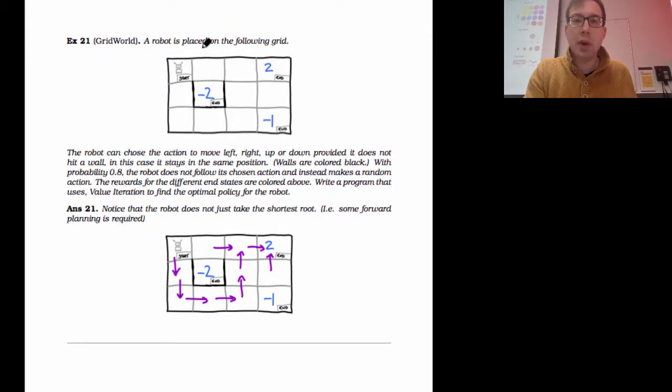So here is a robot placed on a grid. This is exercise 21. So rather than start with all the proofs, let's have a look at this. I've got a little robot and it can move left, right, up or down. With some probability 0.8, the robot just chooses a random direction to move in amongst the available moves. So with 0.2 probability he follows what I tell him to do. With 0.8, he goes wherever he wants just at random. Now, the job of the robot is to reach one of these end positions. If it reaches this end position, he loses two pounds. If he reaches this end position, he loses one pound. If he reaches this end position, he gets two pounds. So essentially, he wants to get to here.